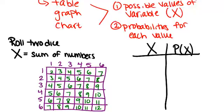So the possible sums are 2, 3, 4, 5, 6, 7, 8, 9, 10, 11, and 12. So every number from 2 to 12.